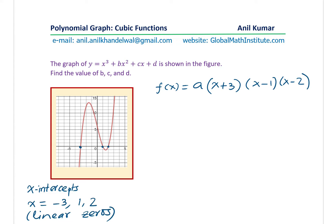So these are the linear zeros. Now a gives you a family of the curve. With these zeros, we could actually draw many graphs.